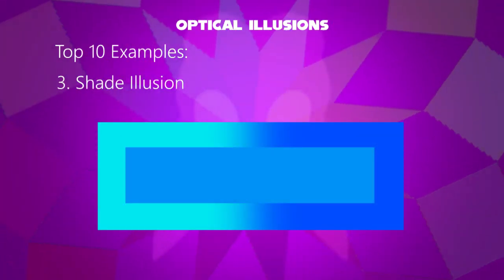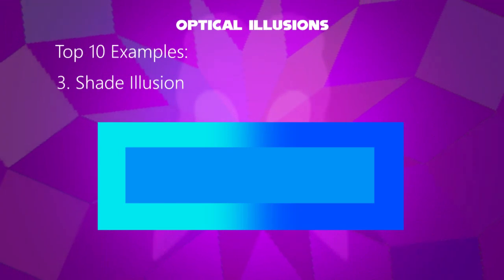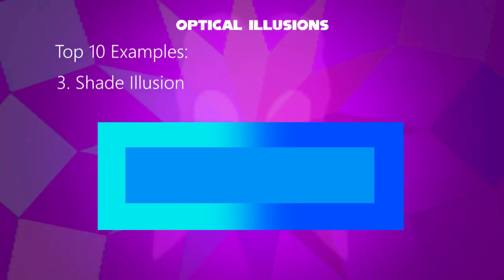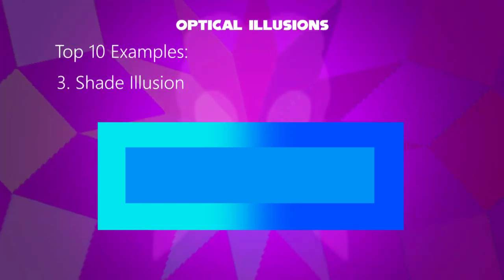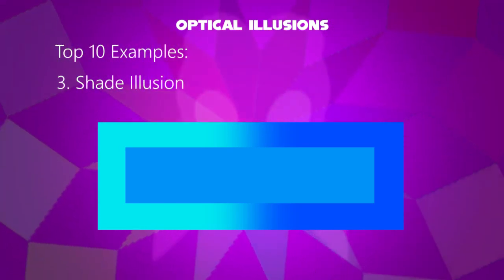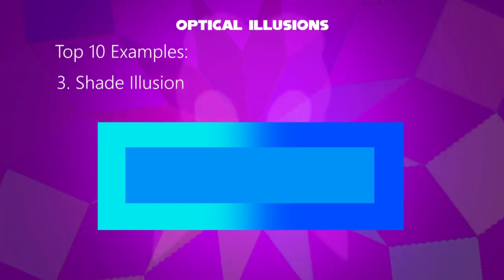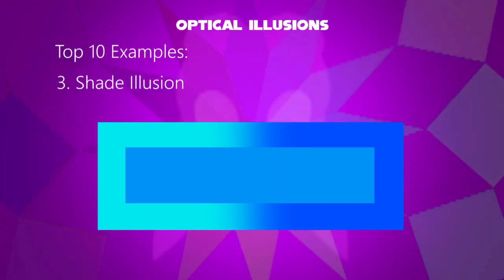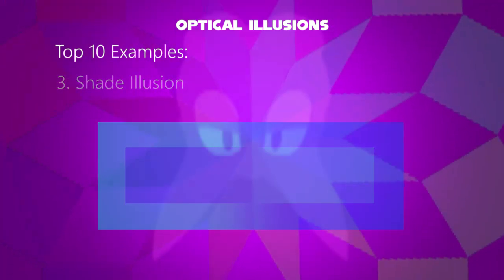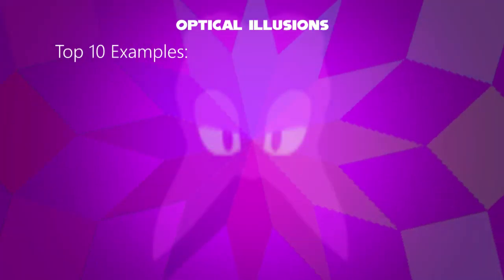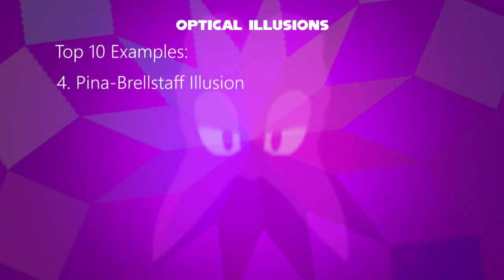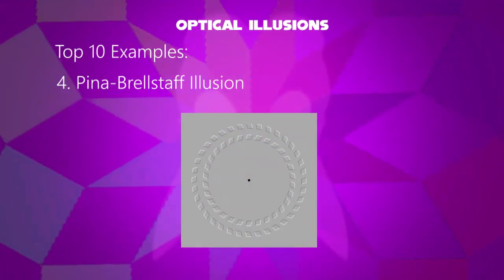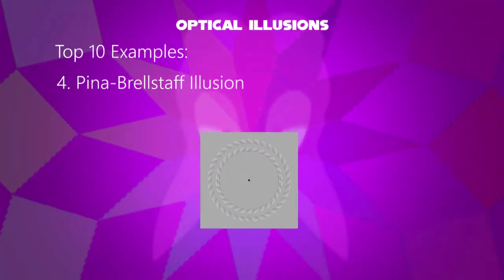Third example: the shade illusion. A rectangle with a solid color is placed on a gradient background. It looks like the color is changing, but actually it is not.